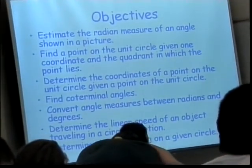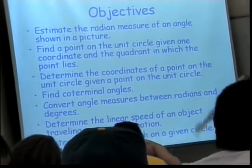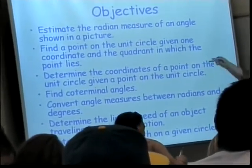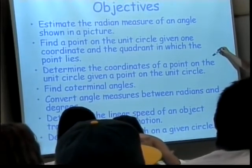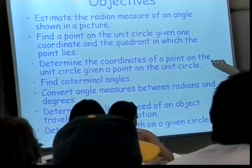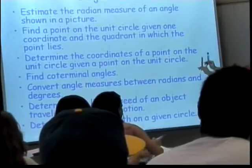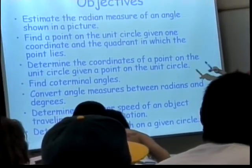We're going to be able to estimate the radian measure of an angle shown in a picture. We're going to find a point on the unit circle given one coordinate and the quadrant in which the point lies. We're going to determine the coordinates of a point on the unit circle given some other point on there.